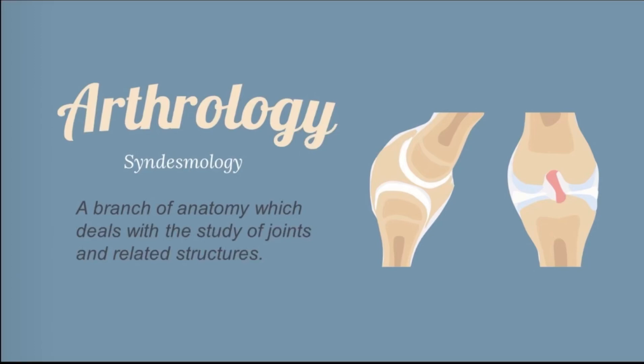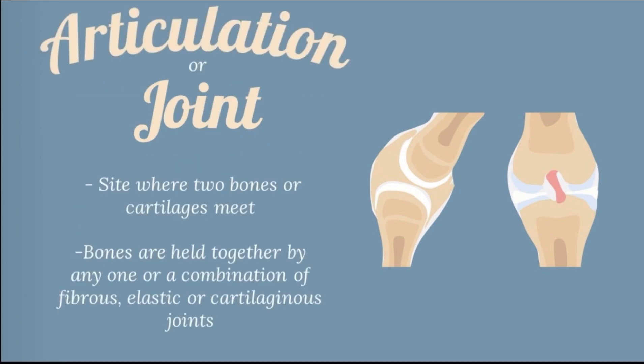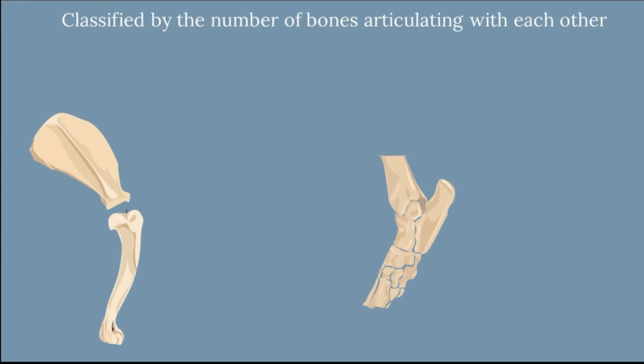Our topic today is about arthrology or syndesmology. Arthrology is a branch of anatomy which deals with the study of joints and related structures. The articulation or joint is a site where two bones or cartilage meet. Bones are held together by one or a combination of fibrous, elastic, or cartilaginous joints. The joints are classified by the number of bones articulating with each other.